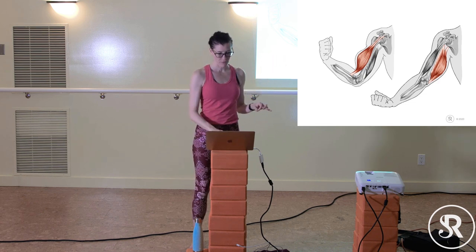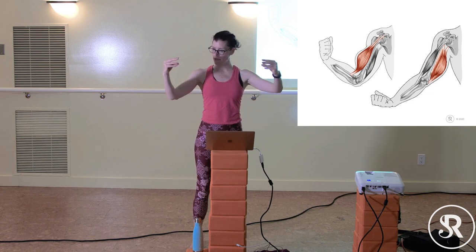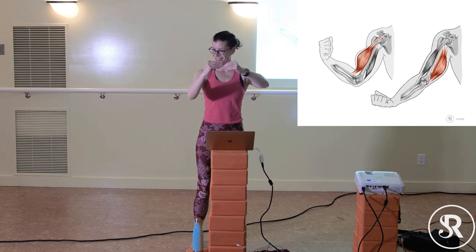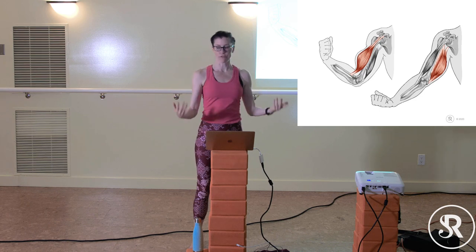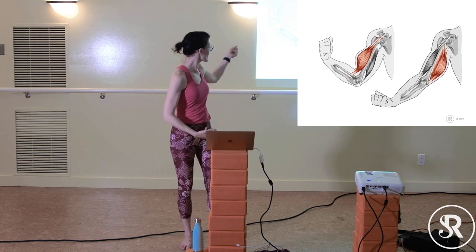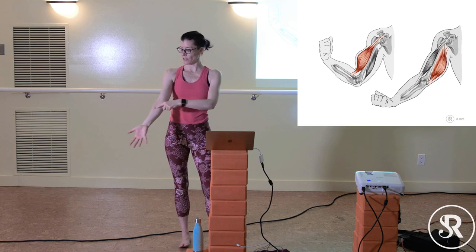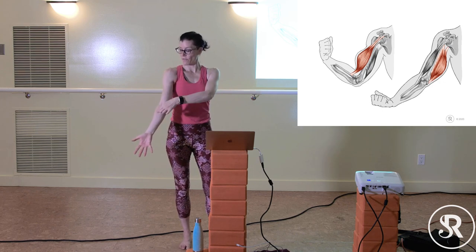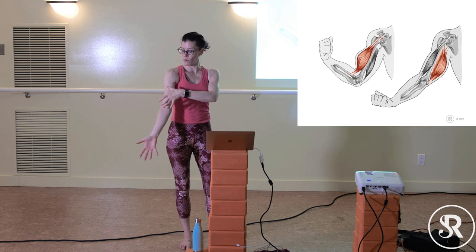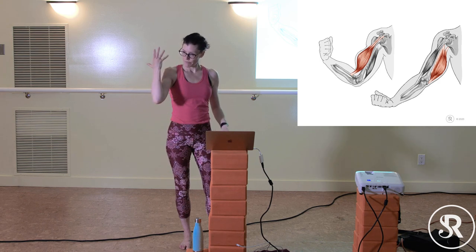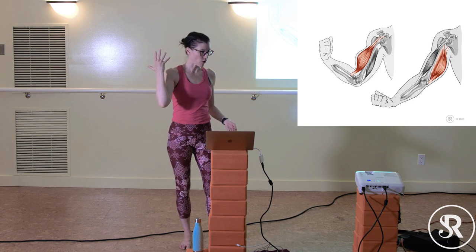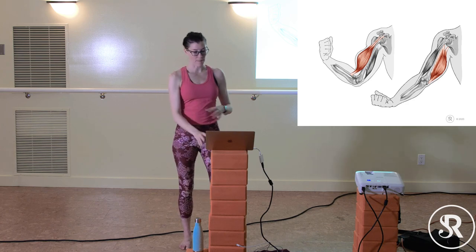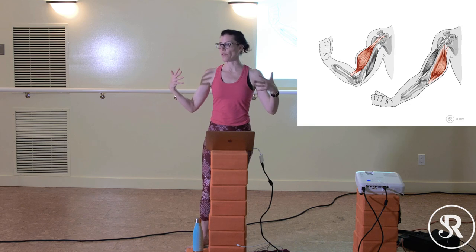When a muscle activates, it contracts to the center — whatever it's attached to gets pulled in. For example, the bicep attaches here and here; if those two points pull closer to each other, it flexes the elbow. It's better to think of them as just two insertion points, since either end could move.